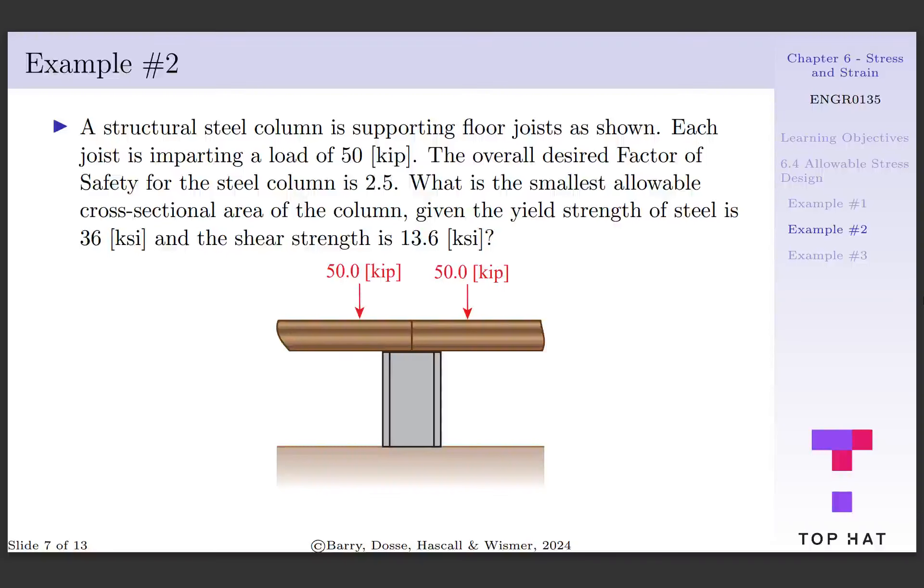We want to know the smallest allowable cross-sectional area of the column given the yield strength of steel is 36 ksi and the shear strength is 13.6 ksi. For context, we'll note that 1 kip is equal to 1,000 pound force.